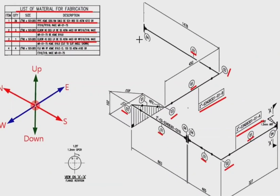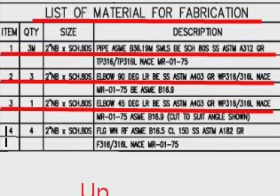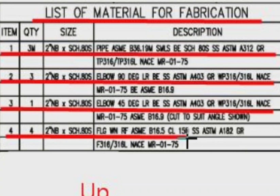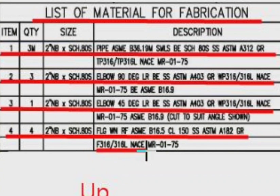Detail number four: the quantity is four pieces, two inches, schedule 80S, flanges, weld neck, raised face, class 150. The material is stainless steel, grade 316L.